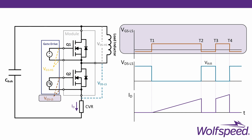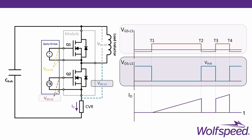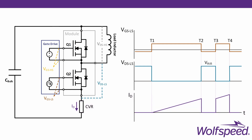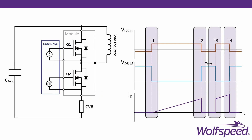Here, we have our gate-source voltage across Q2, our drain-source voltage across Q2, and the drain current through Q2. The reason double pulse tests are used to extract these transient characteristics is because the device only needs to be switched four times, and the total duration of the test is on the order of tens of microseconds.